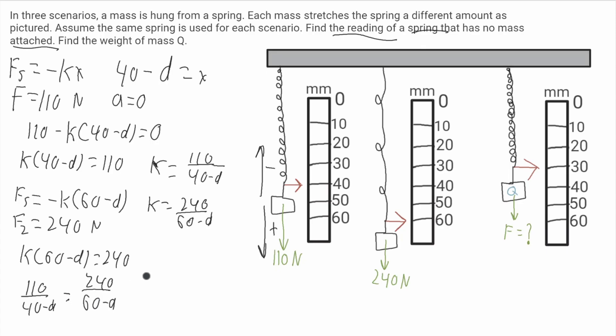I'll cross multiply and I'll get 110 times 60 minus d is equal to 240 times 40 minus d. When you distribute these to both terms on both sides and then solve for d, you'll get d is equal to 23 millimeters. And that is our first answer, the reading of the spring that has no mass attached.